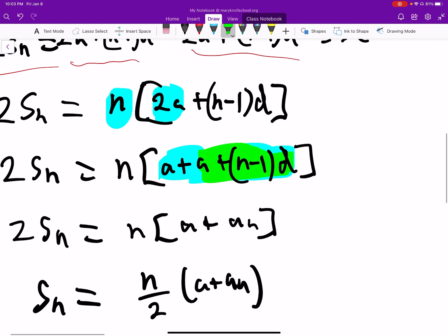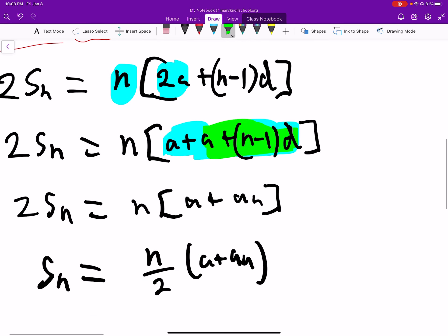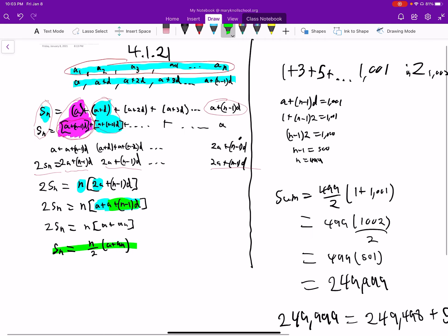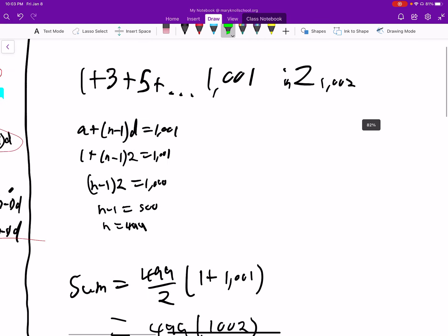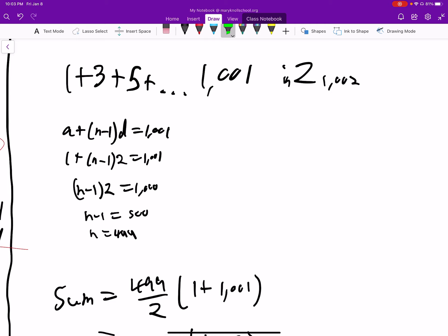So then that turns into AN. Divide both sides by 2 because remember, we have 2SN and we get the formula. Okay, so right there we can use that formula from now on to do these problems. So here's, remember that's A1 and then this is AN.